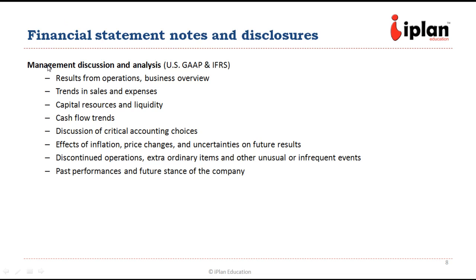Another important part of financial statements is management discussion and analysis, or MDA. This is mandatory under US GAAP — generally accepted accounting principles — and IFRS, which is international financial reporting standards. MDA includes results from operations and a business overview, guiding us on how the company is doing under current business situations and how it is expected to perform in the near future. We get an idea about trends in sales and expenses — for example, if raw material costs are expected to go up or down, that might impact expenses — and all these things must be captured in the MDA.